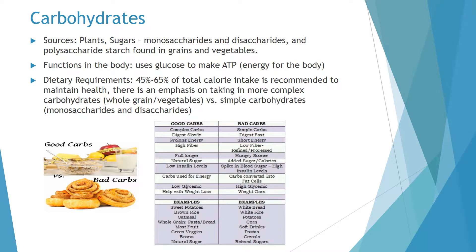A nutrient is the substance in food the body uses to promote normal growth, maintenance, and repair. Nutrients are broken down into several categories, the first being carbohydrates. Some sources of carbohydrates are plants, sugars, and polysaccharide starch found in grains and vegetables. The body uses the glucose found in carbohydrates to make ATP, which is energy for the body.